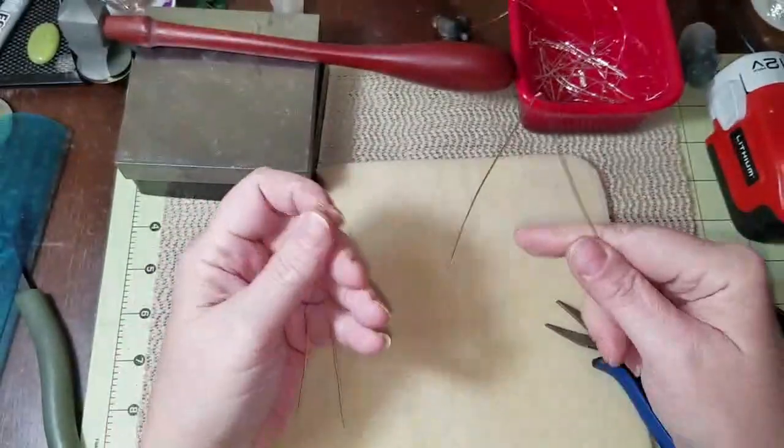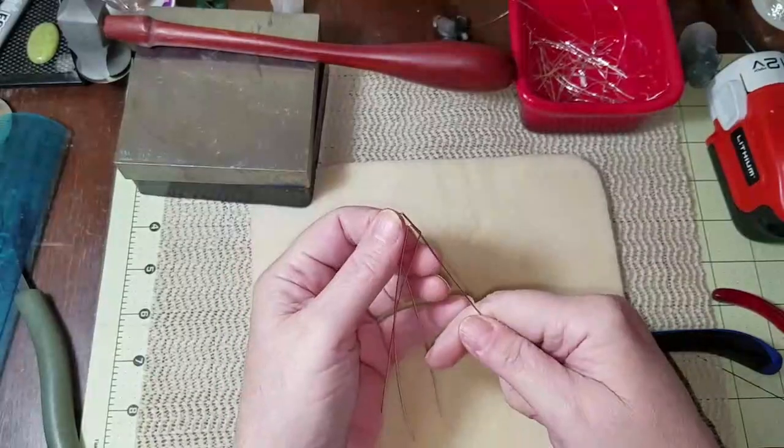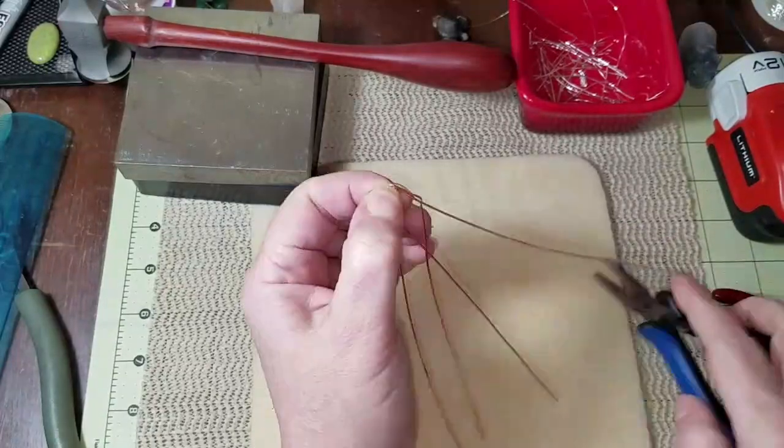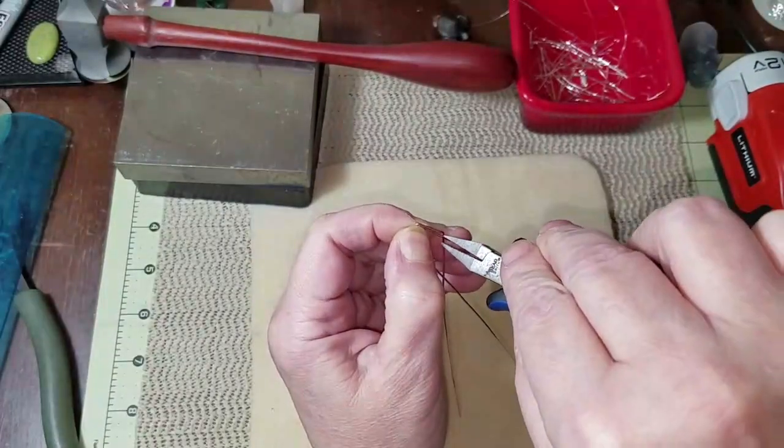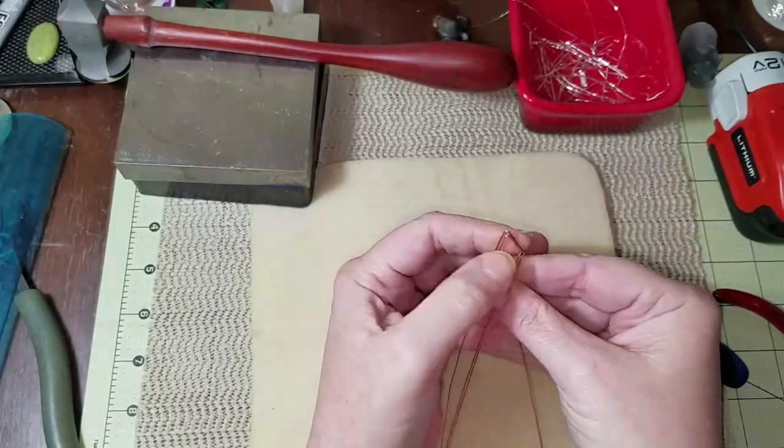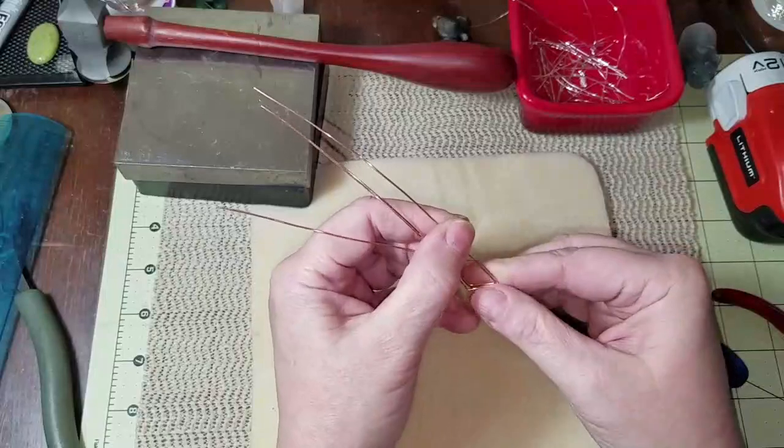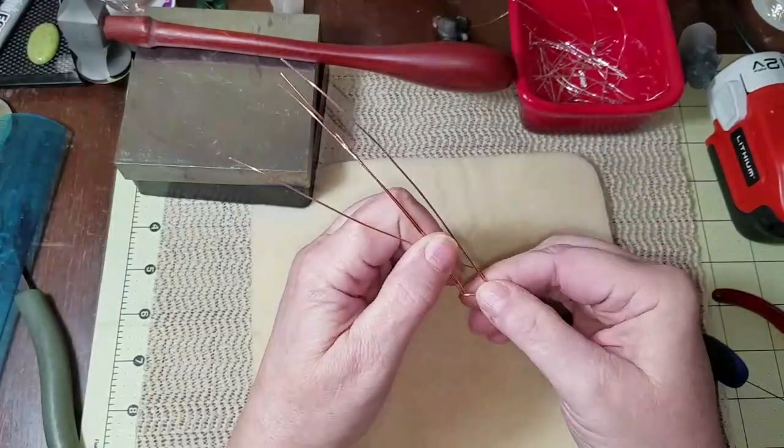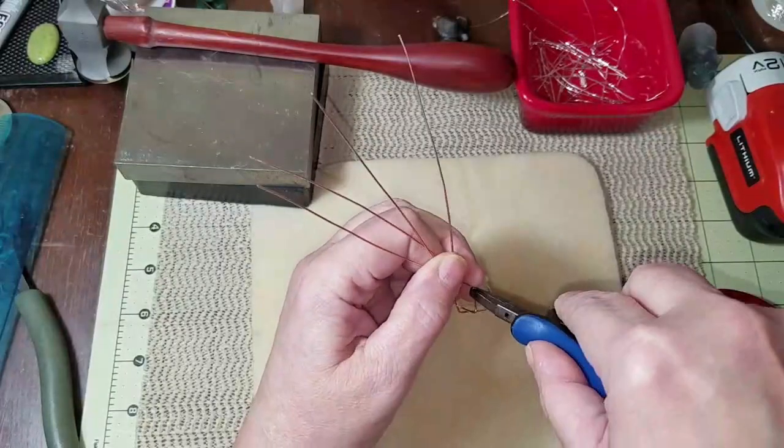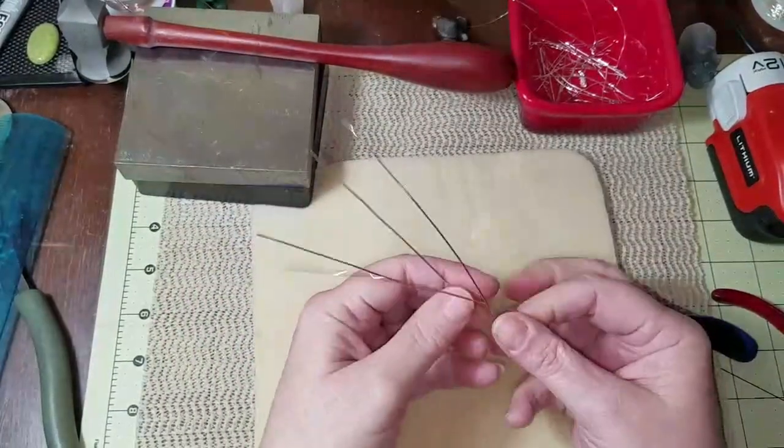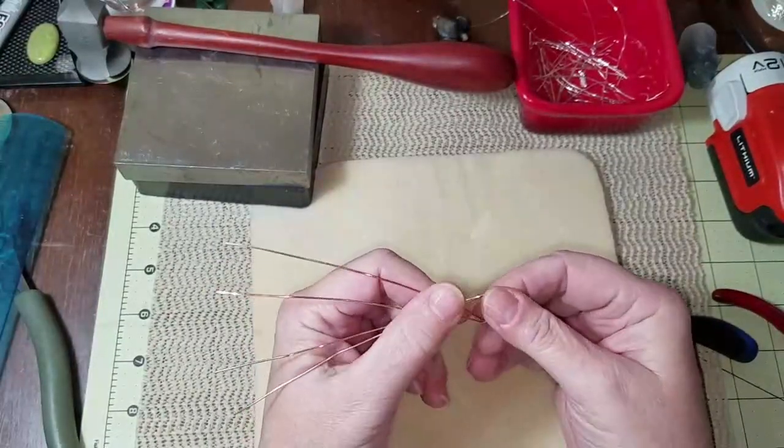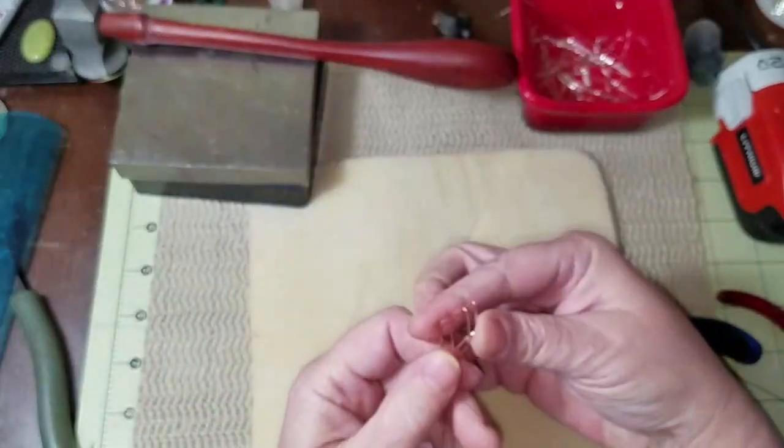We want this to fit right inside that diamond shape. So now what I need to do is find that point right there and give that a bend, do the same thing on the other side. Okay, that fits in there really good. So now what we need to do is elongate this.